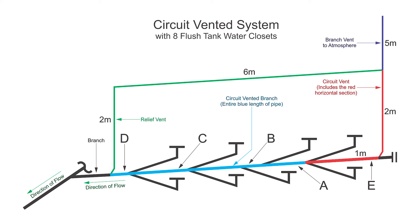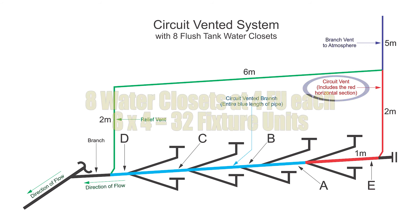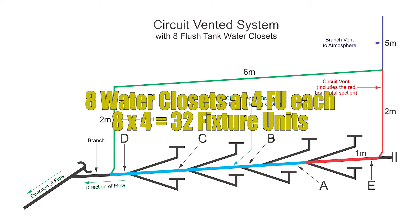It is finally time to size the circuit vent, but before we can do that we need to know a couple of things. First, the fixture unit load — that's easy. We have 8 water closets at 4 fixture units each, giving us 32 fixture units.